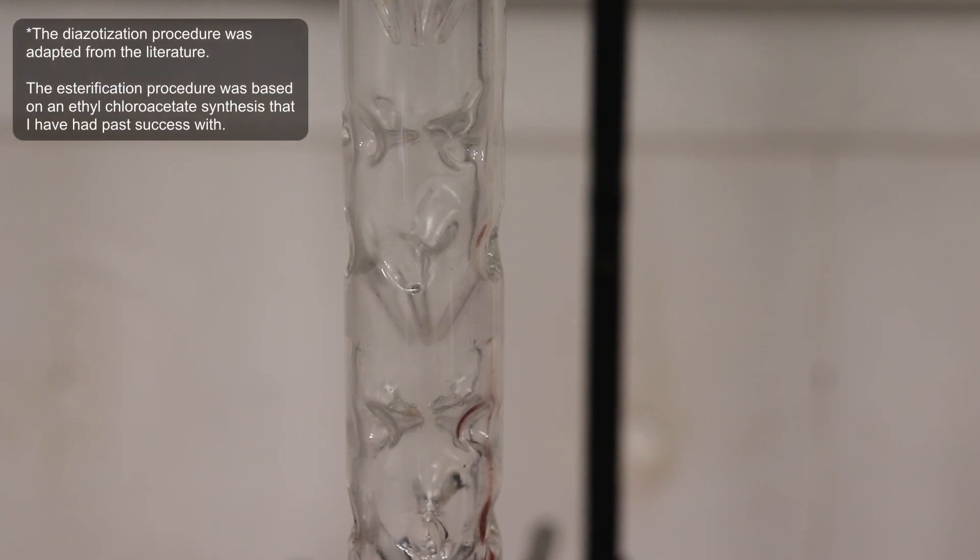As I followed a known literature procedure, and obtained a product that had the correct boiling point range, I would be confident in saying that I have successfully made ethyl-2-S-bromopropionate.